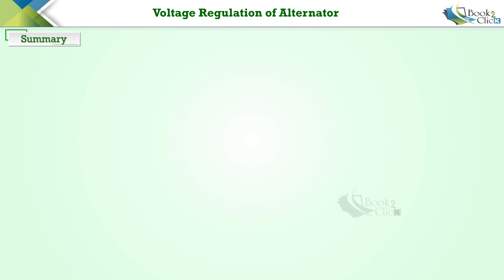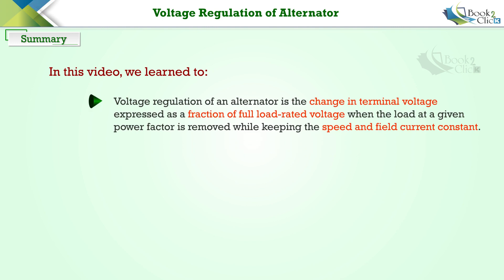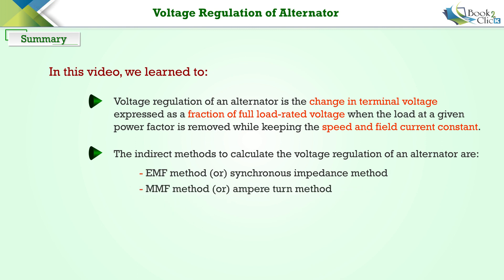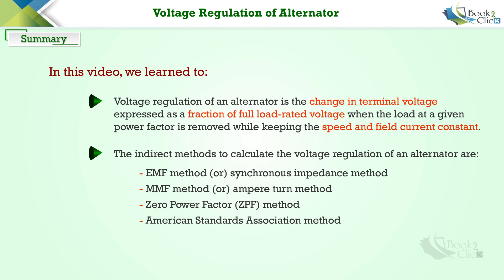In this video, we learned that voltage regulation of an alternator is the change in terminal voltage expressed as a fraction of full load rated voltage, when the load at a given power factor is removed while keeping the speed and field current constant. The indirect methods to calculate the voltage regulation of an alternator are: the EMF method or synchronous impedance method, the MMF method or ampere turn method, the ZPF method or zero power factor method, and the American Standards Association method.